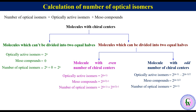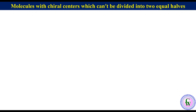Now let's discuss these three cases with examples one by one. The first case is molecules with chiral centers which cannot be divided into two equal halves. Let's take the example of lactic acid. It has one chiral center and cannot be divided into two equal halves.